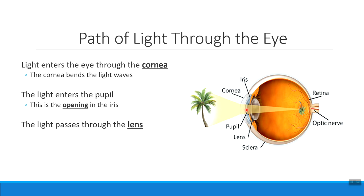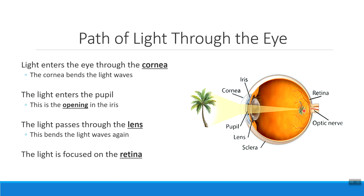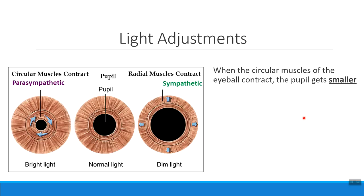Just behind the pupil is the structure called the lens, and the lens is the second structure that really works on bending the light waves. When the lens bends the light waves, its goal is to focus them onto that back layer of the eyeball called the retina. Remember that the retina is where we find those cells that actually help us to perceive those light waves.